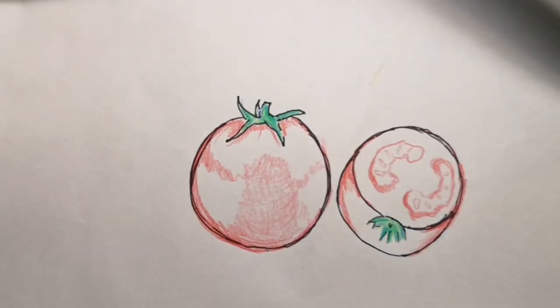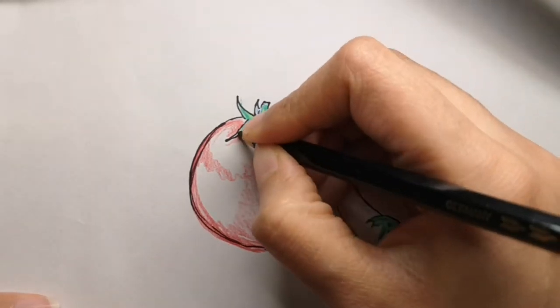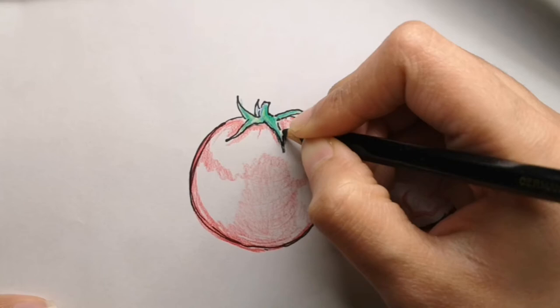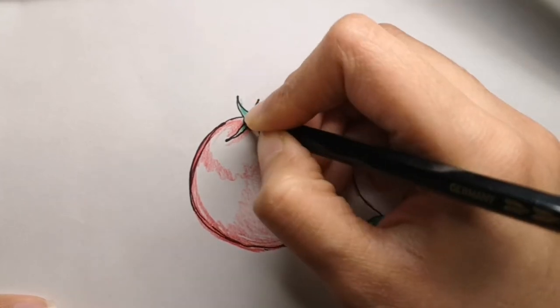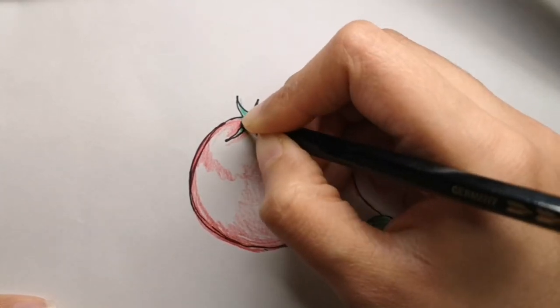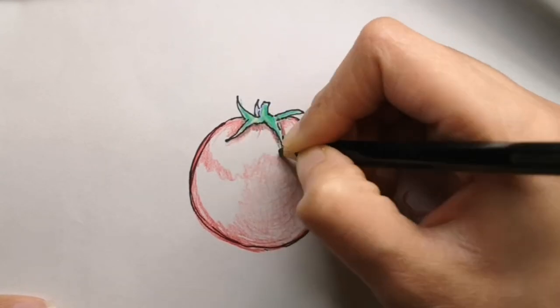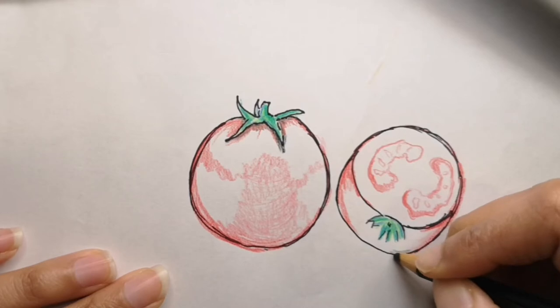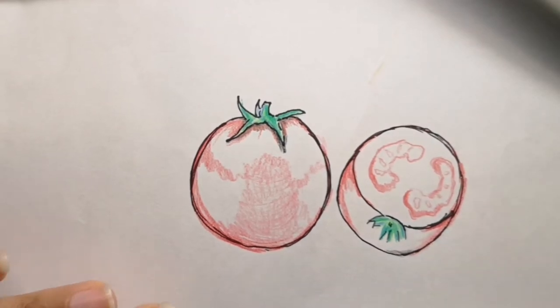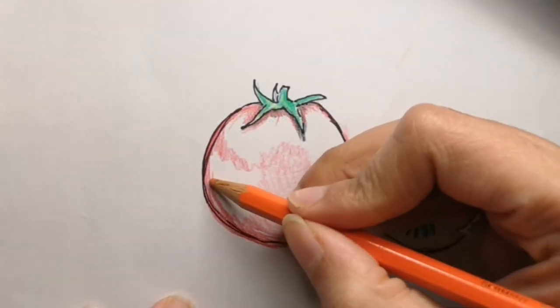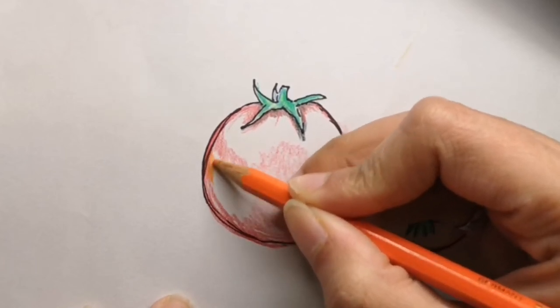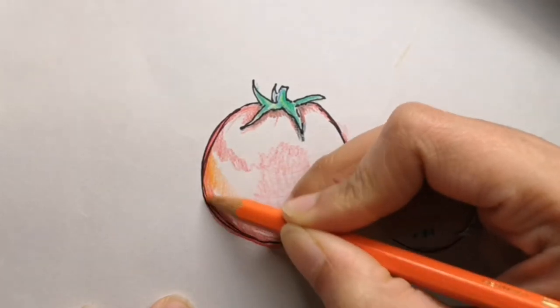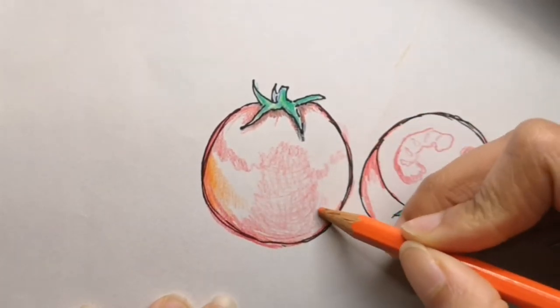If you want me to draw a more realistic tomato and a half a tomato, let me know in the comments below. I will draw that for you as well. This is just an easy version of it. This is a very easy way to draw a tomato.